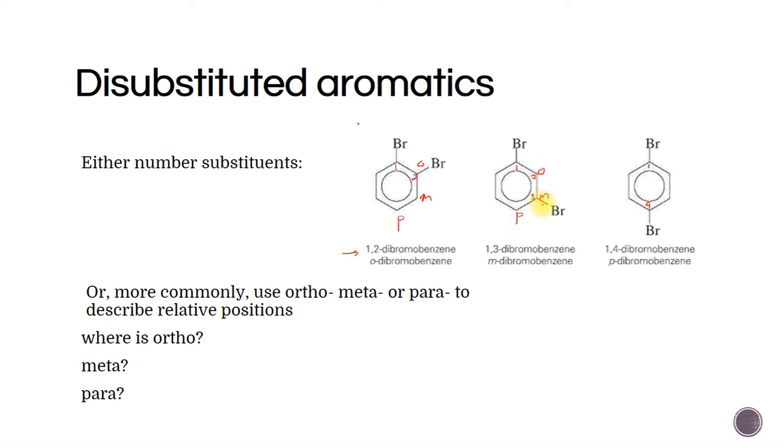If it occurs at the meta position, we would label it as meta-dibromobenzene. One, four is across from each other. Para means across. These have utterly different properties. They smell different, they have a different melting point. They're totally different. So ortho is carbon number two, meta is carbon number three, and para means carbon number four.